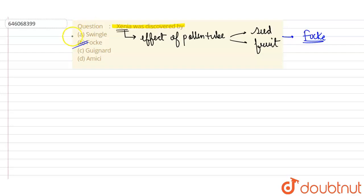When we talk about Swingle, Swingle basically has a lot of contribution in aquaculture or we can say fisheries. Therefore, this can't be the correct option.